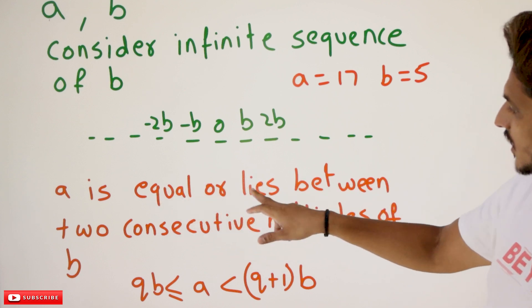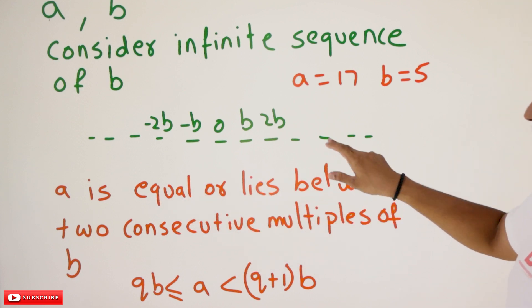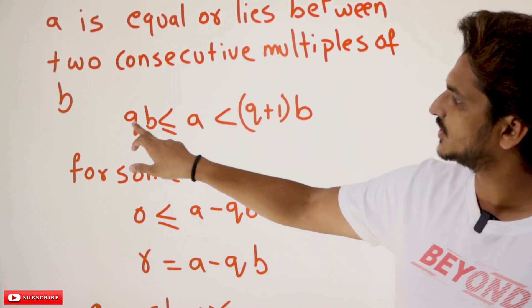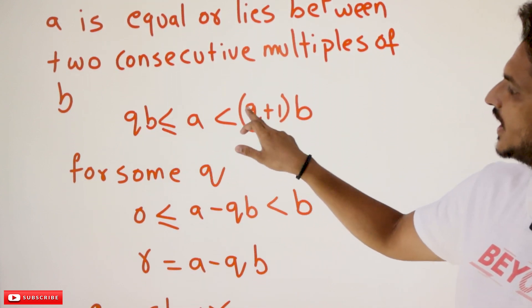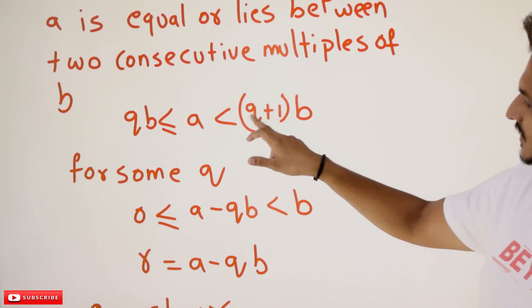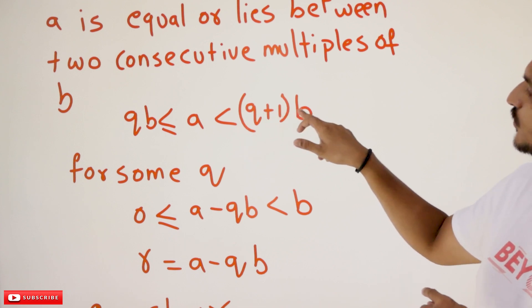Very basic. A is equal or lies between two consecutive multiples of B. This can be written as QB less than or equal to A less than Q plus 1 times B.